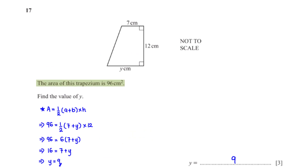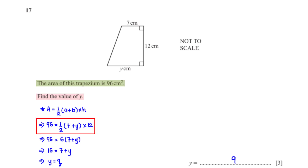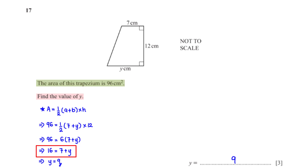The area of this trapezium is 96 centimeters squared. Find the value of y. Here is the formula for the area of a trapezium. A and B are the parallel sides of the trapezium, which in this case are 7 centimeters and y centimeters. The height of the trapezium is 12 centimeters. Half times 12 is 6. When we divide both sides by 6 and then subtract 7 from both sides, we get y equals 9.